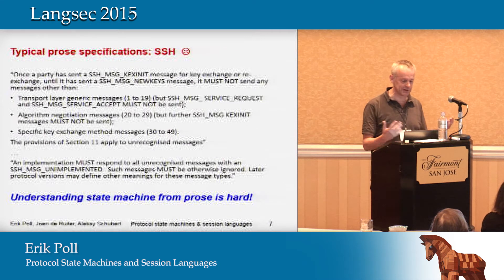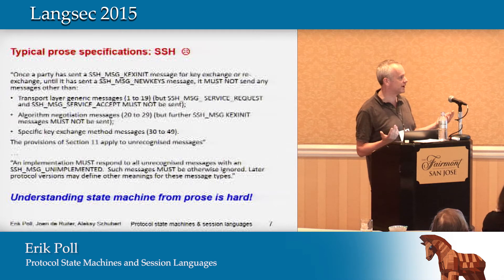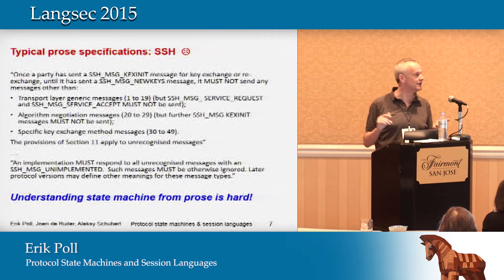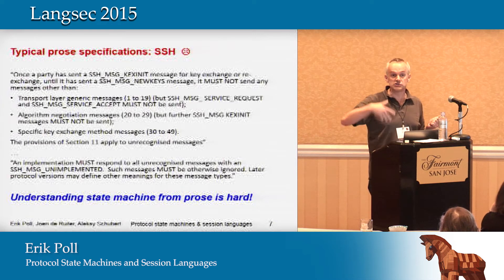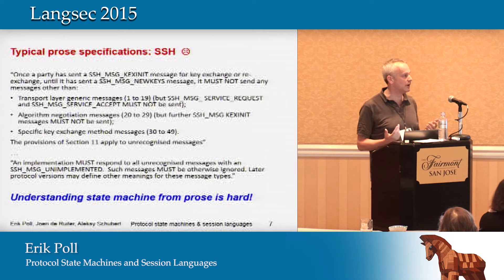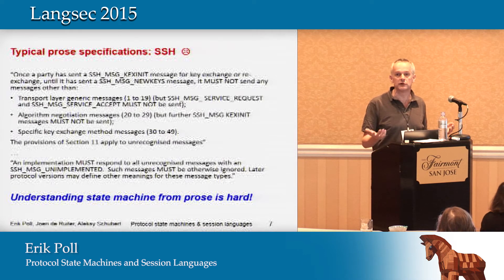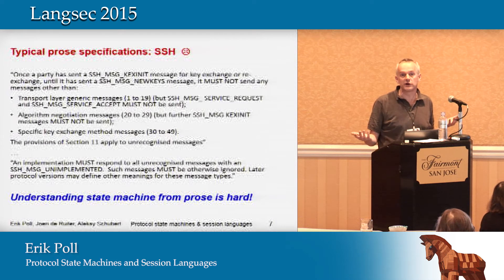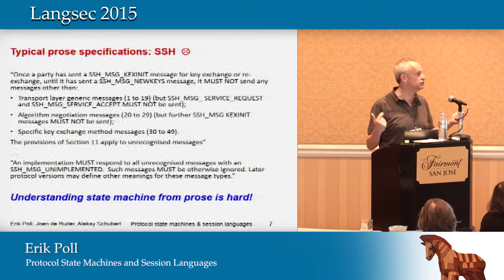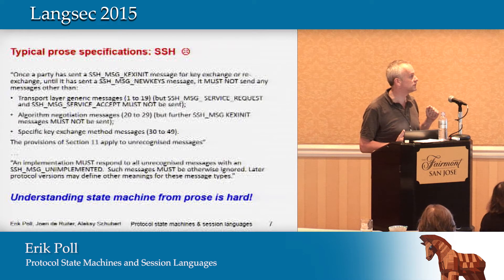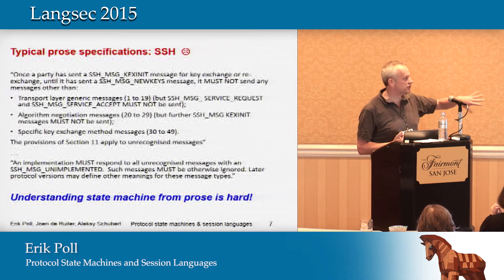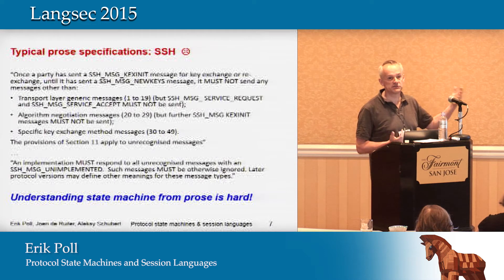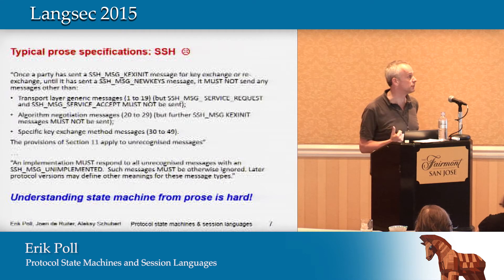One funny thing in SSH is the notion of an unrecognized message — if you get a message you don't recognize, you have to tell the other party you don't implement this. But it's very hard to determine what counts as unrecognized. If you get a message from a higher protocol layer in the wrong order, is it unrecognized, should you ignore it, or respond that you don't implement it? Understanding the state machine from this kind of prose can be very hard, and SSH is not the most complex protocol out there.